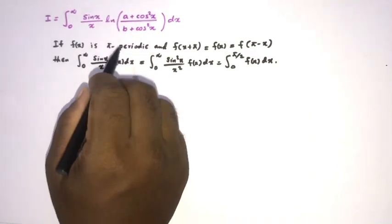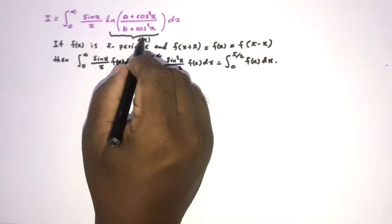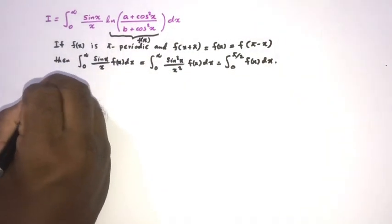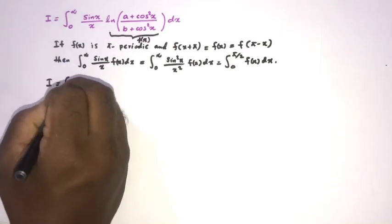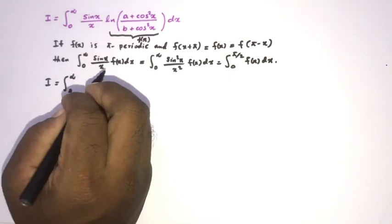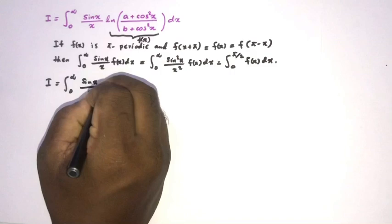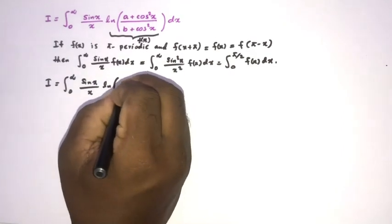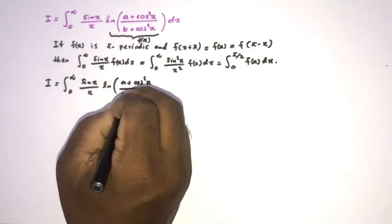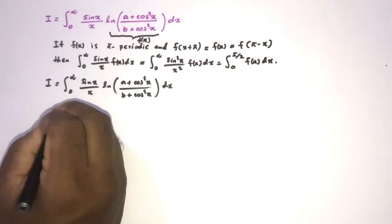So we can take this part as equal to f(x). We can write our integral I as the integral from zero to infinity of sine(x)/x times the natural log of (a + cos²x)/(b + cos²x) dx.